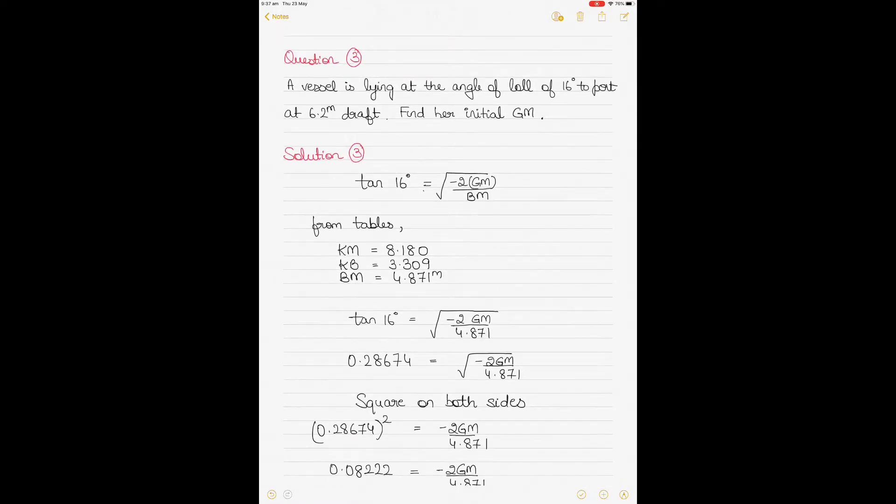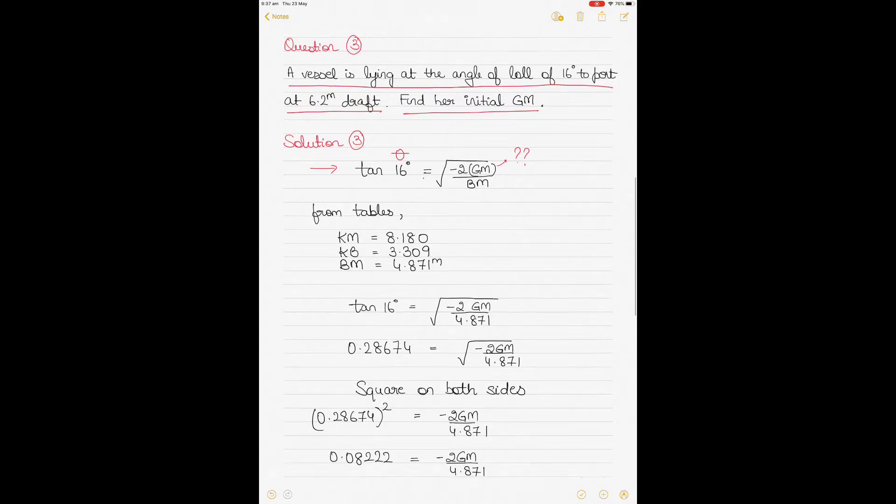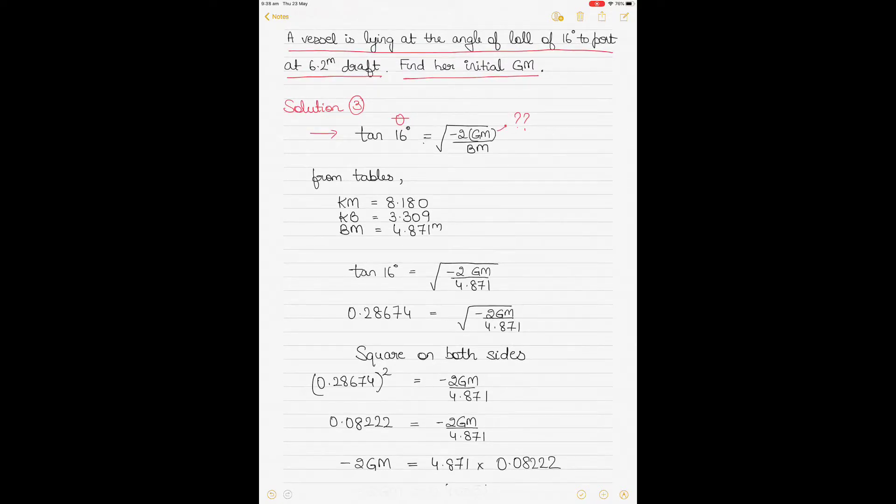Let's go into the third question. In this third question, we might have to go into the hydrostatic tables because the information is not available to us. So the third question is that a vessel is lying at the angle of loll of 16 degrees to port at 6.2 meters of the hydrostatic draft. This time you have to find her initial GM. So going by the formula here, you have been given tan 16 degrees. So this is θ. You have been given that. The GM is not given to you. So this is the one that you have to find out. But let's see if we can find out BM.